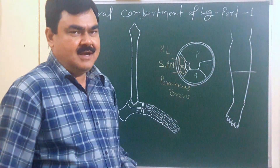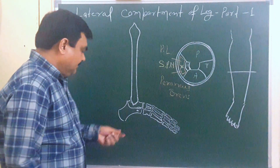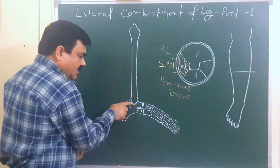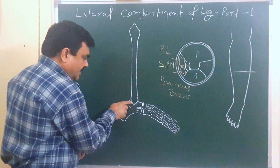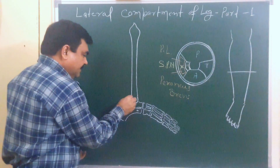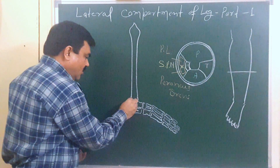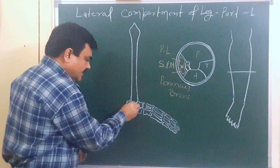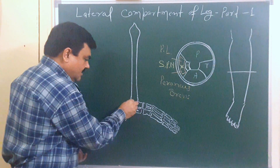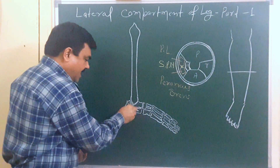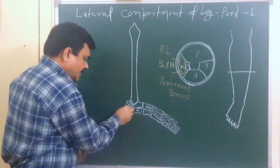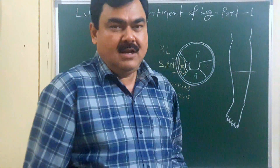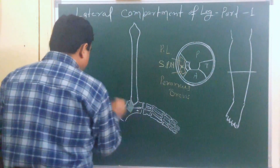Regarding the modification of the deep fascia in the lateral region: here is the posterior border of the fibula, this is the posterior border of the lateral malleolus of the fibula, and here is the calcaneum. From the posterior border of the lateral malleolus to the calcaneum, a fibrous band is present. This is known as the superior peroneal retinaculum.